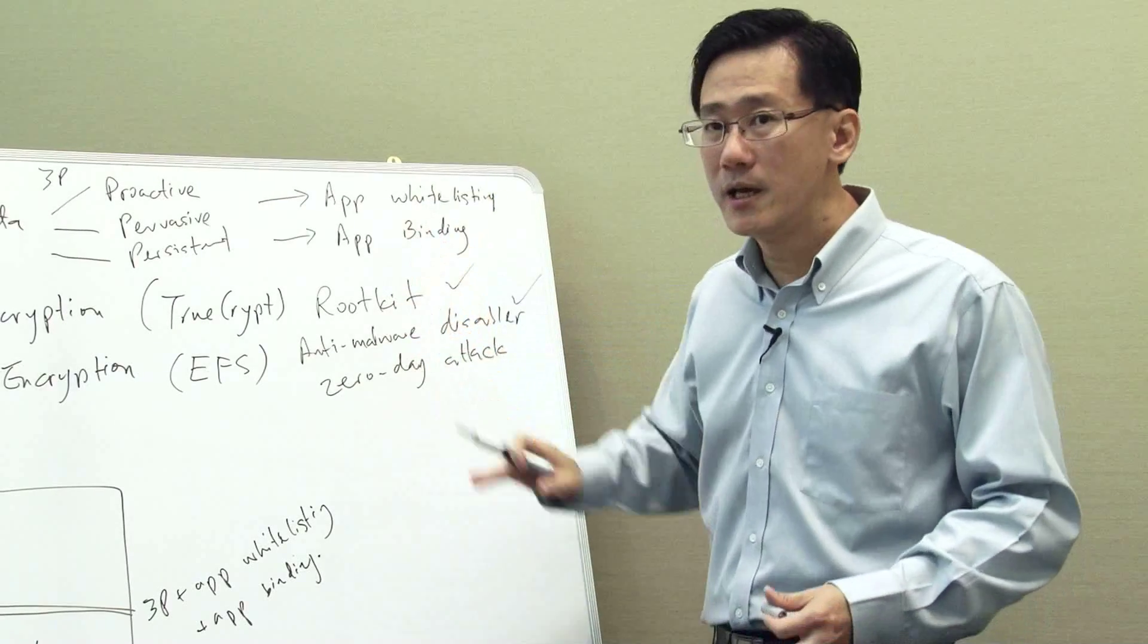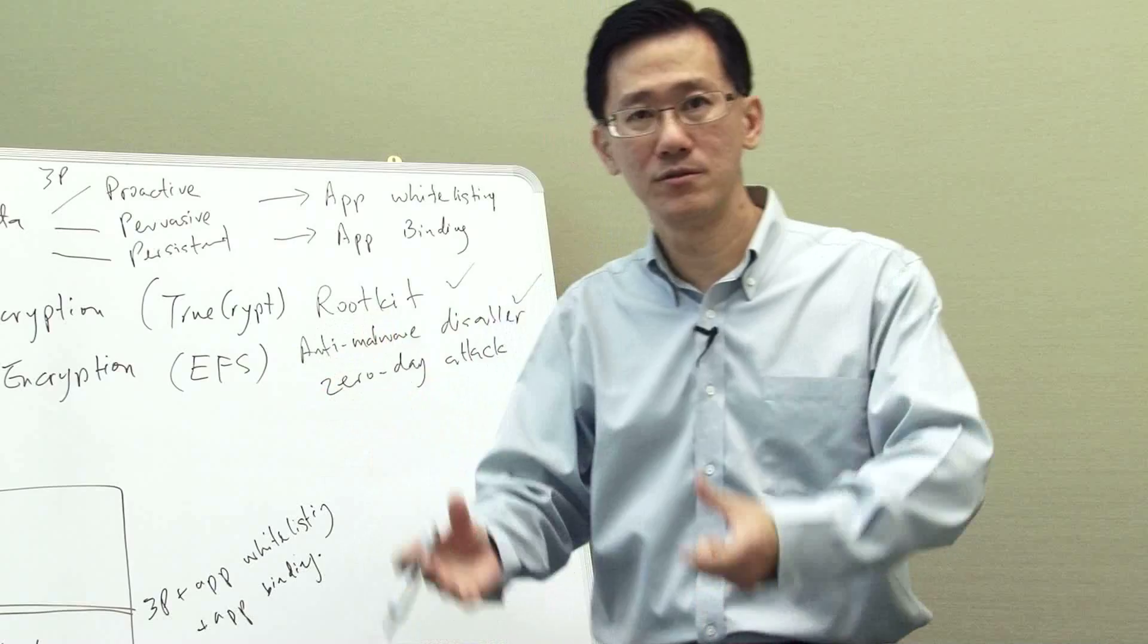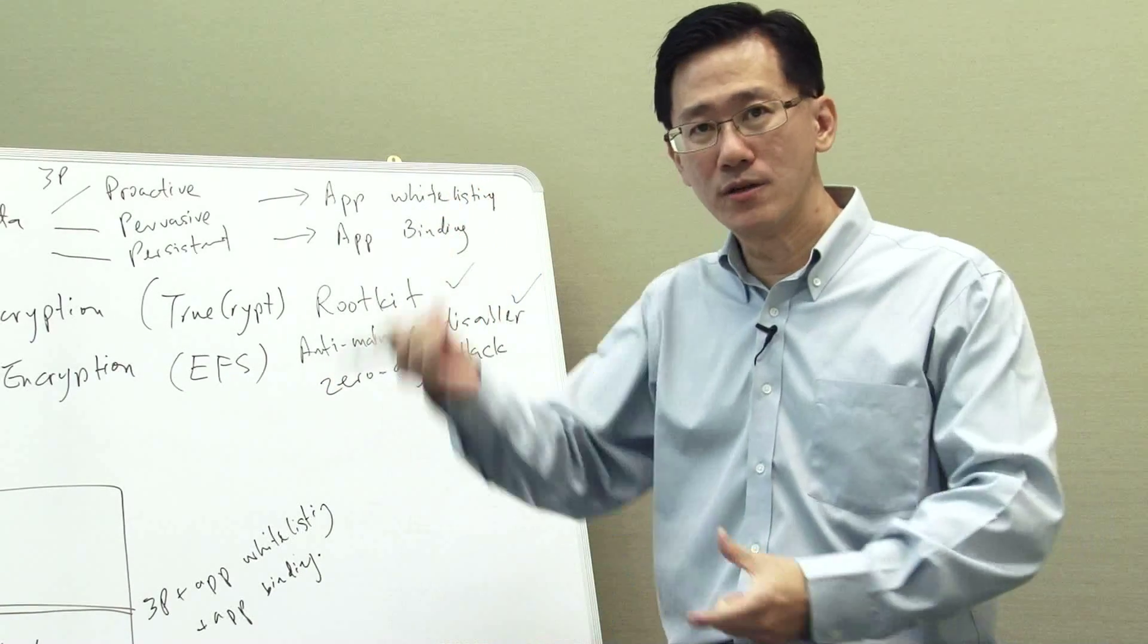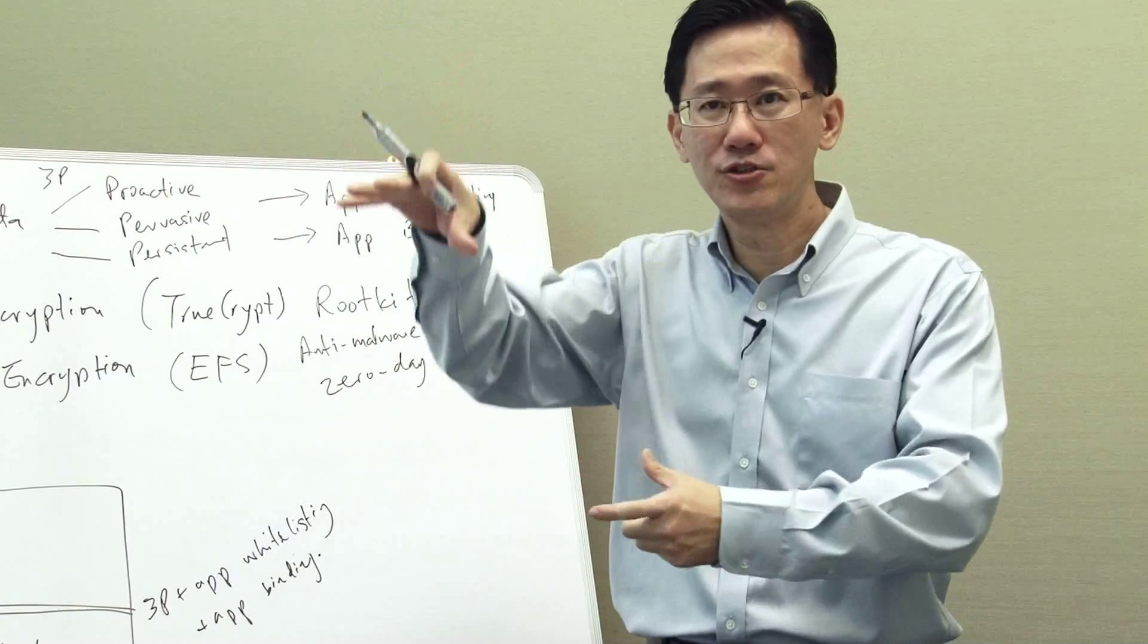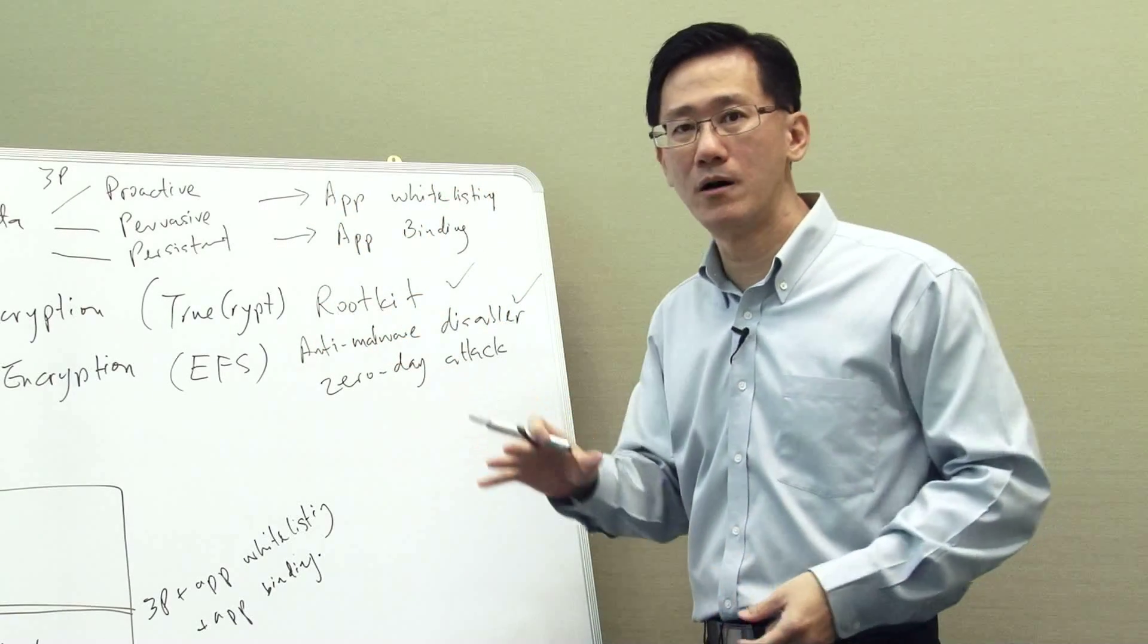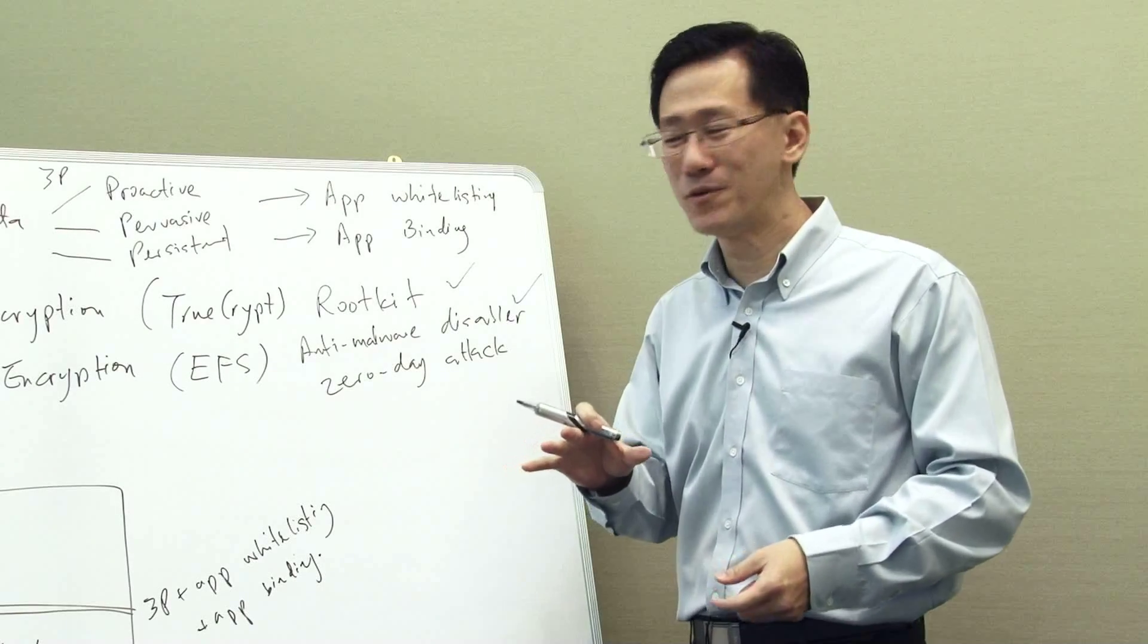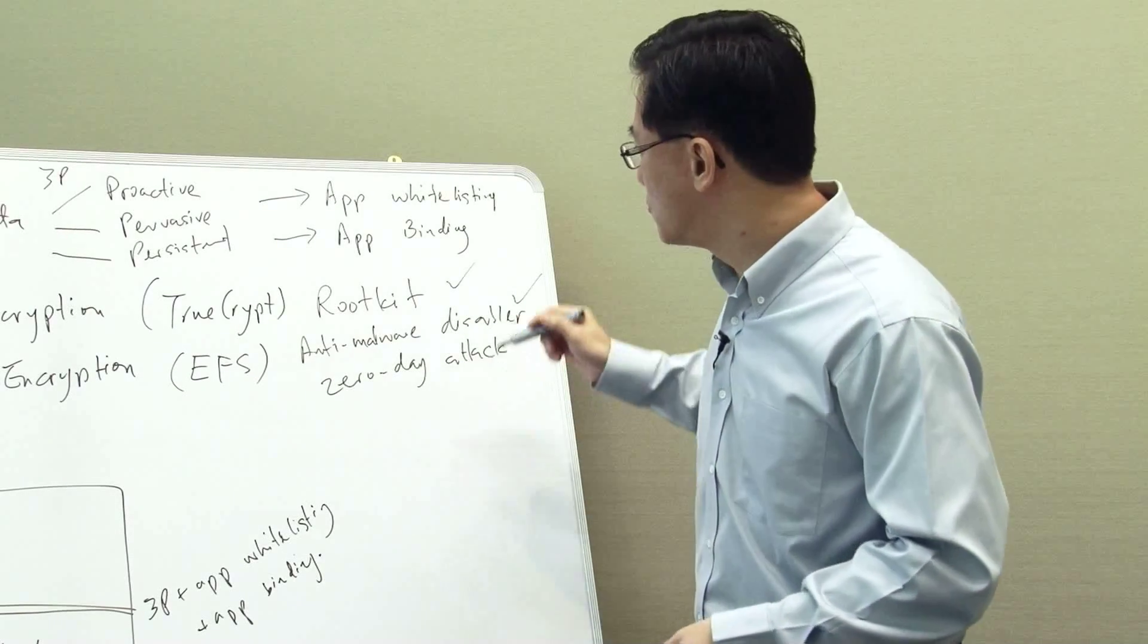The only kind of zero-day attack that can still get in is those that actually attack the trusted application. So you have a trusted application like Adobe program, it loads the file in there, and suddenly they hijack the whole process and the whole process becomes a malware. Suddenly a trusted application can now become a malware and wanting to read your data. And that's where application binding comes in.